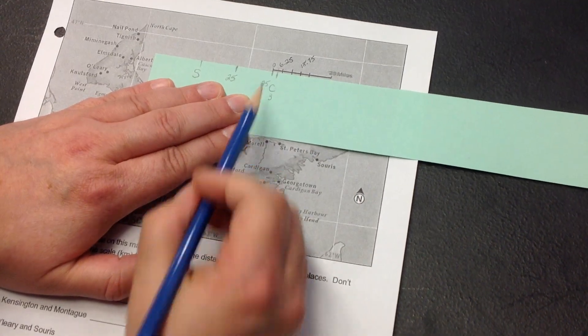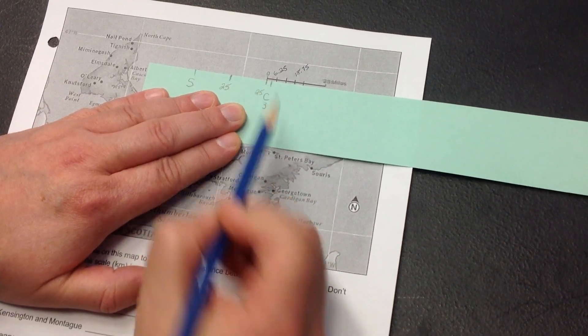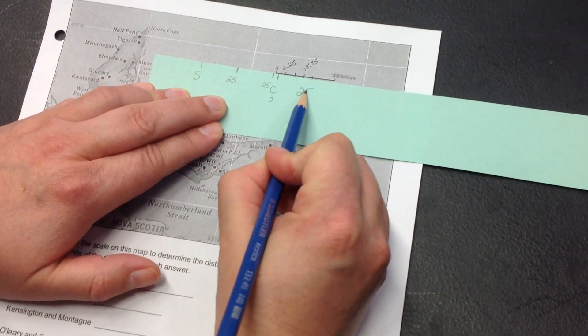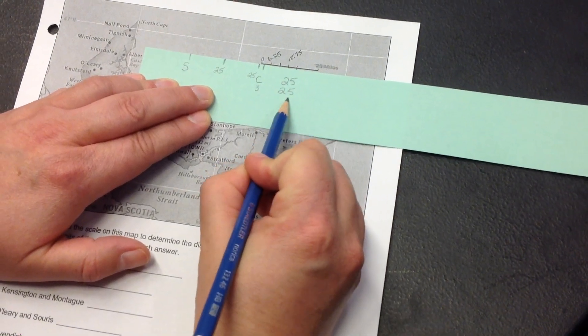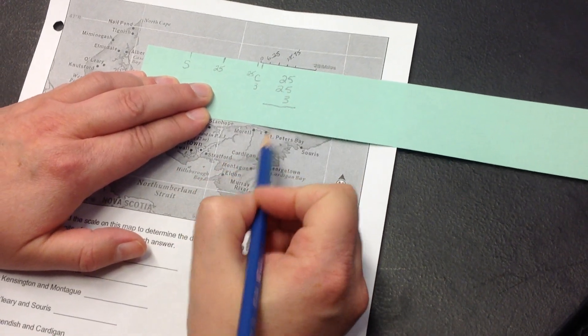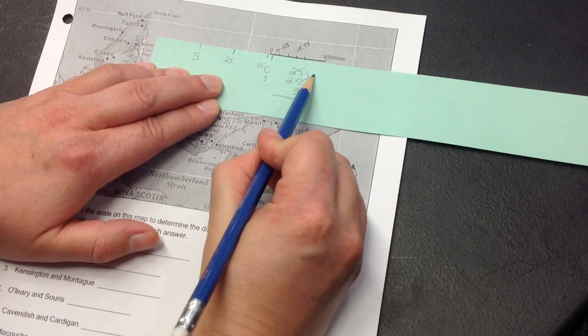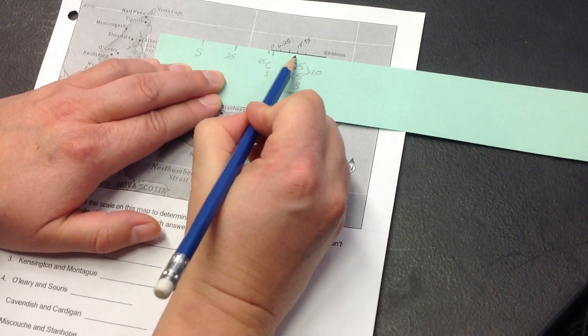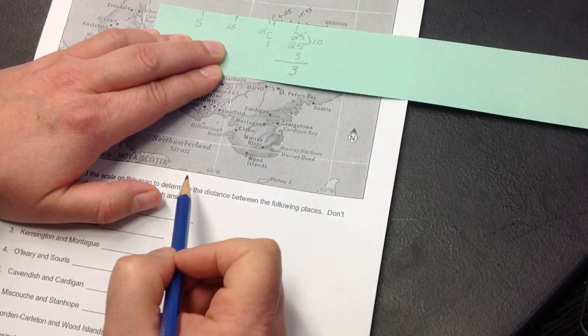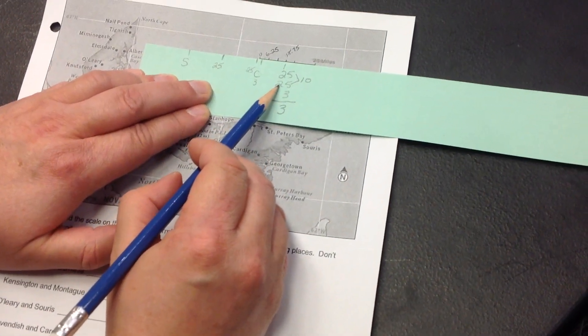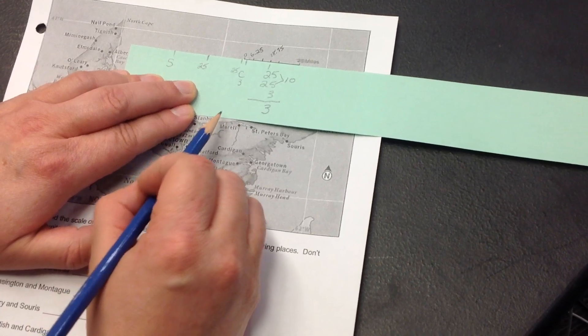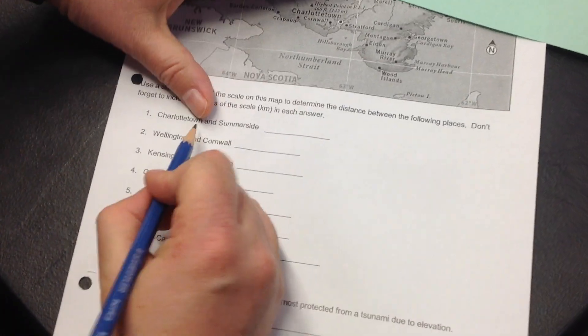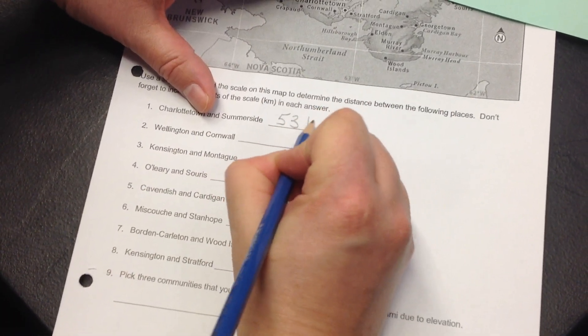Now, I'm going to add up my numbers. 25 plus 25 plus 3. 5 plus 5 is 10, plus 3 is 13. I write down my tens, write down my ones and I carry my tens. Now, I add the tens column. 2 plus 2 is 4 plus 1 is 5. So, then I write the answer right here, which is 53 kilometers.